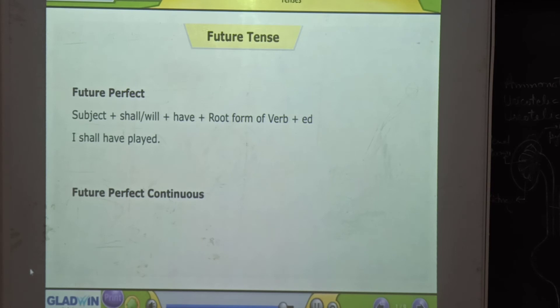Future perfect continuous: subject plus shall or will plus have been plus root form of verb plus ing. Example: I shall have been playing.